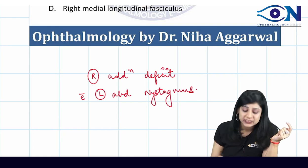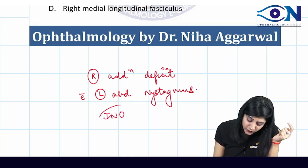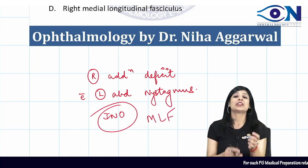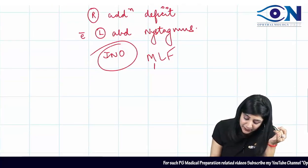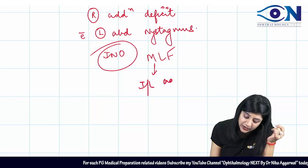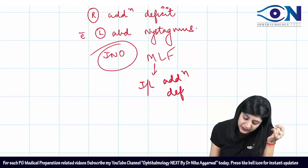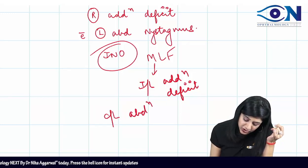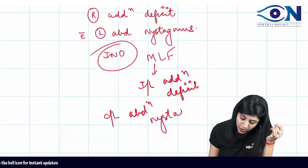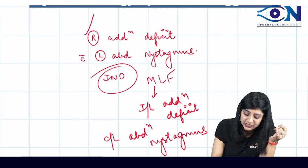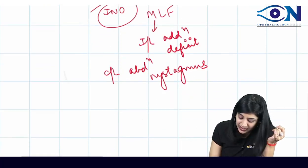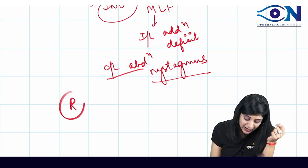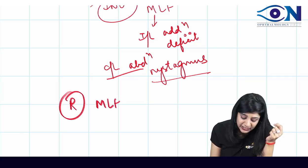So what is this? This is actually INO, where you have the lesion of the MLF. Always remember — we have ipsilateral adduction deficit with the contralateral abduction nystagmus. So if there is a right adduction deficit and left abduction nystagmus, that means the patient is having a right MLF lesion.